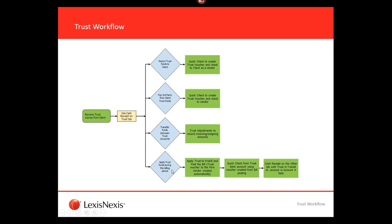The last part of the workflow is the billing process where you apply trust money during pre-bill edit. Unlike prepaid, the trust money doesn't automatically apply to the current pre-bill balance — you have to know how much you want to apply, whether to fees or expenses or certain timekeepers. On the pre-bill, when it's open, there is a tool called the trust or prepaid allocator you can use to drill down, or you can just put the amount of trust to apply on the pre-bill.